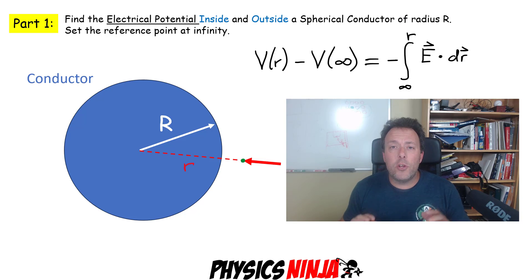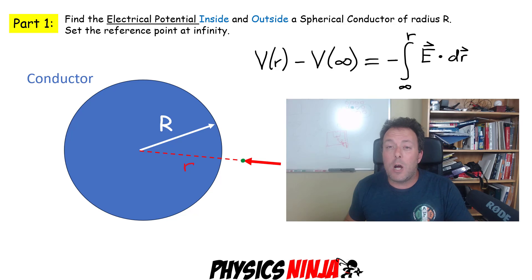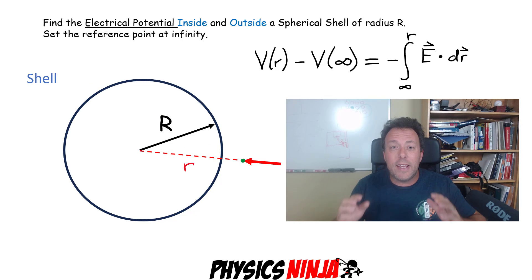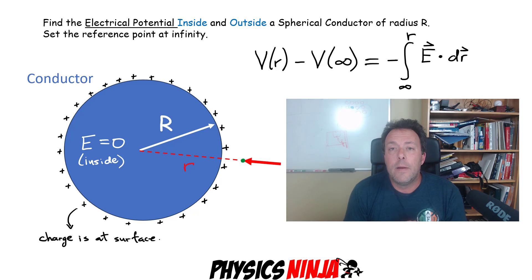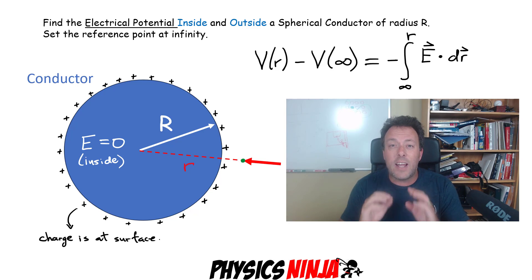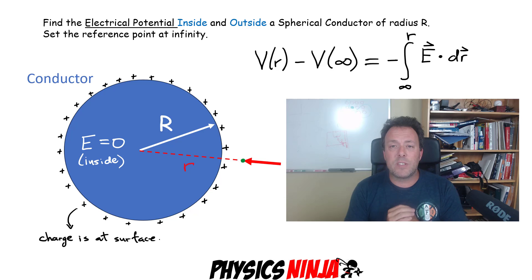Hi everybody, Physics Ninja here. Today we're going to look at how you can calculate the electrical potential produced by a charged conducting sphere. This is the first part of the video. The nice thing about this problem is it also applies to a conducting shell, because if you charge a sphere, the charge goes to the surface and there is no charge inside that conductor, because the electric field has to be zero inside. You can show that using Gauss's law. We want to focus on calculating the electrical potential.